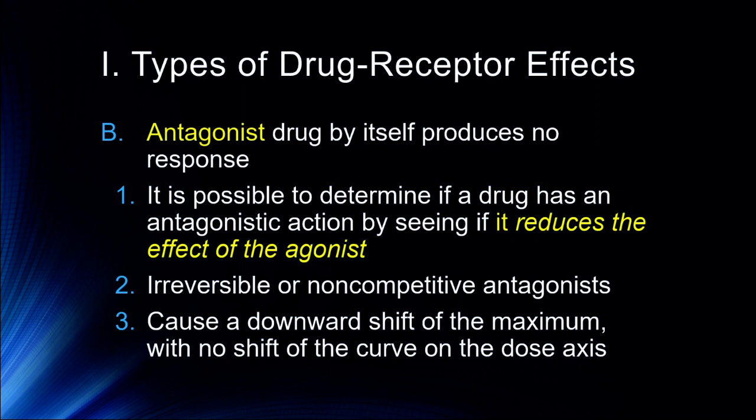For example, flumazenil is a drug that blocks the action of benzodiazepines — it is a benzodiazepine antagonist, and in particular a GABA antagonist, because it reduces the effect of those benzodiazepines. These can be irreversible or non-competitive antagonists. What they do is cause a downward shift of the maximum with no shift of the curve on the dose axis, essentially pushing down the effect of that drug by providing a complete antagonist action.